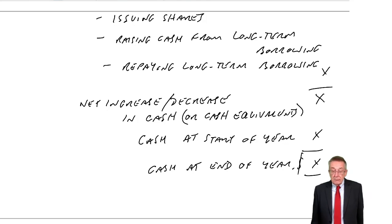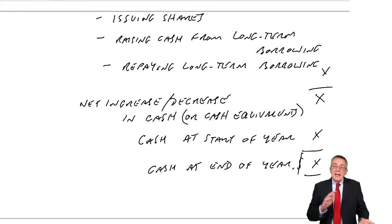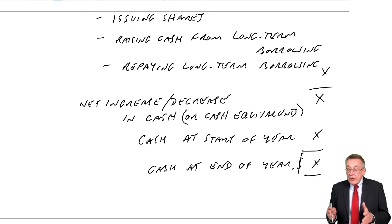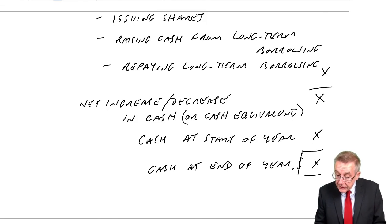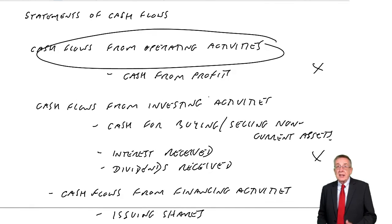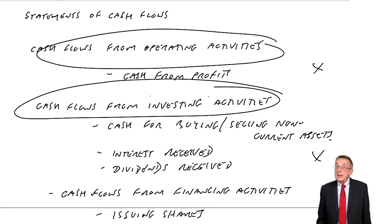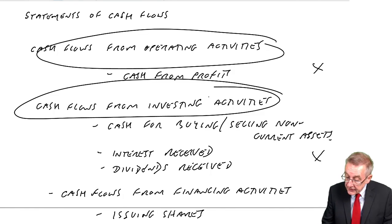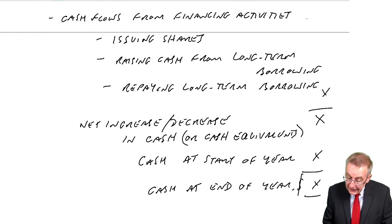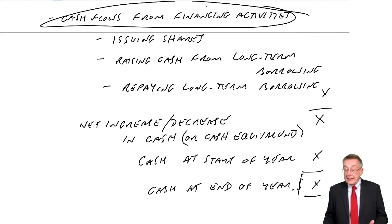That's basically what we're doing — just a statement of cash receipts and cash payments. But all the cash receipts and payments fall under one of these three headings: operating activities — the cash generated from their ordinary trading; investing activities — essentially buying and selling non-current assets, machines, etc.; and financing activities — cash received because they've raised money, or they've repaid long-term borrowing.